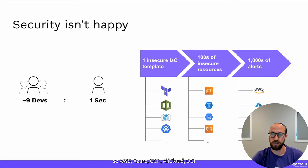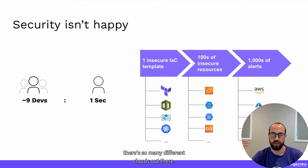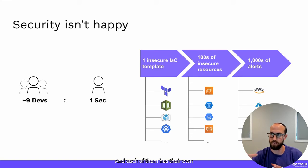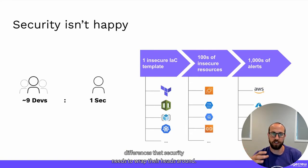Compounding that by the multiple different clouds out there — AWS, Azure, GCP, Alibaba Cloud, OCI — there are so many different clouds, and each of them has their own differences that security needs to wrap their heads around.